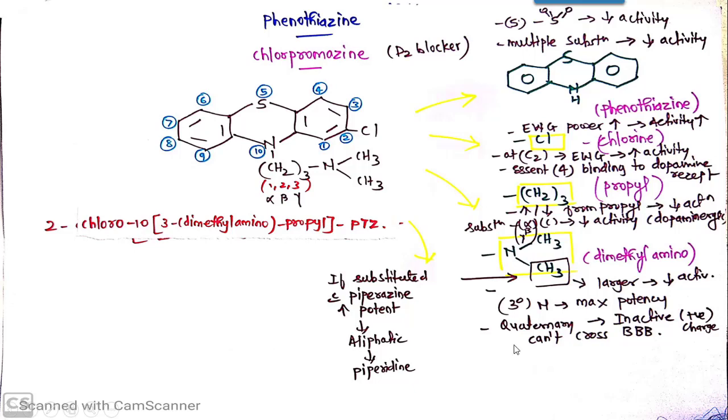This nitrogen should always be tertiary, which will give maximum potency to the compound. Quaternary nitrogen, these quaternary compounds cannot cross the blood brain barrier and they will be inactive. They will carry the positive charge creating difficulty in crossing the barriers.